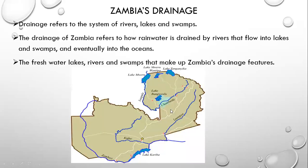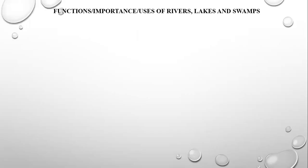As you can see on this map, we have different drainage features. The blue line indicated here is the Zambezi River. Then we have the Kafue River, the Luangwa drainage feature, the Chambeshi-Luapula drainage features, then Lake Mweru Wantipa, Lake Tanganyika, Lake Mweru, Lake Kariba and so on. These are just some examples of Zambia's major drainage features.